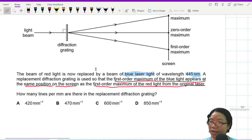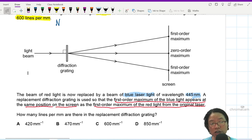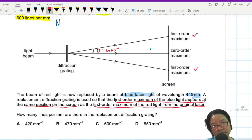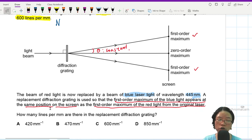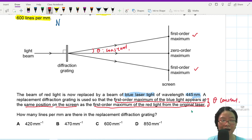So what we are doing now is we are changing lights from red to blue. But I also change the grating such that the first order maximum is still at the same place. Meaning this theta is constant. First order maximum of blue light appear at the same position on the screen as the first order maximum of the red light. This statement tells me that theta is constant. How many lines per mm are there in the replacement diffraction grating?